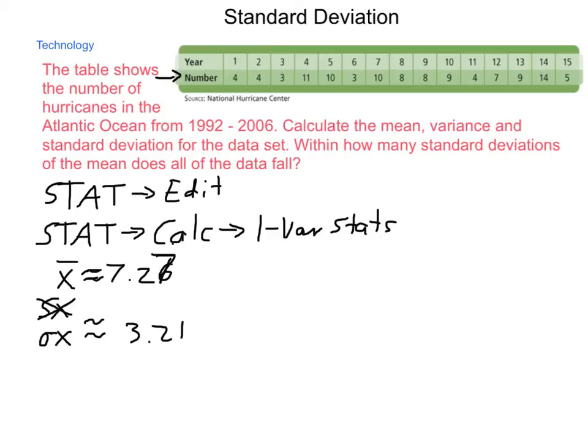Now, it does not give us our variance. As you know, sigma x is our standard deviation, so for variance, we're going to take our sigma x value and square it. And when we do that, we will come up with a value of approximately 10.33.